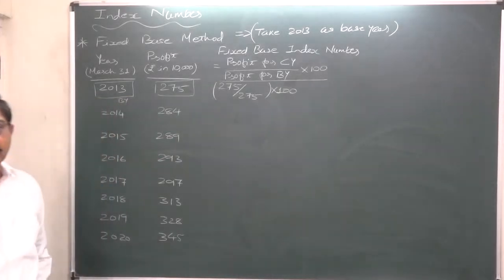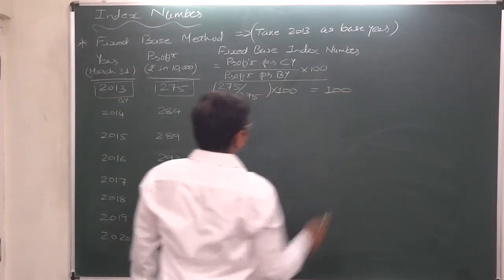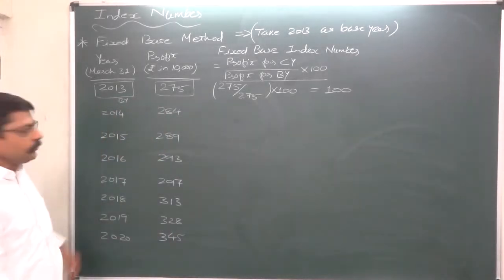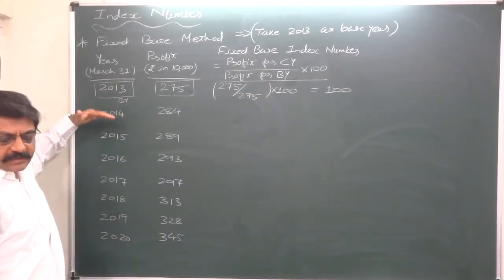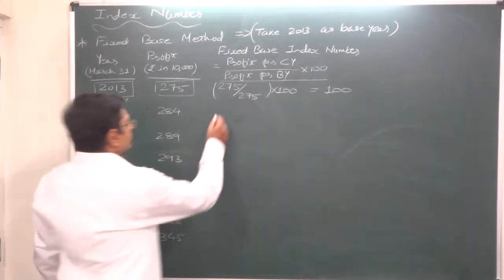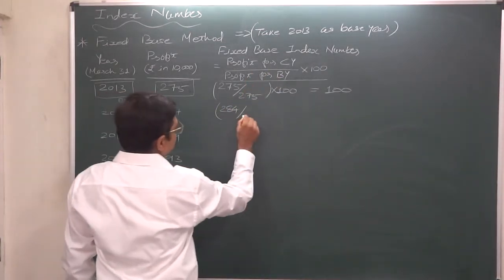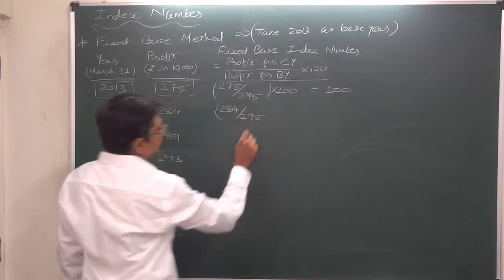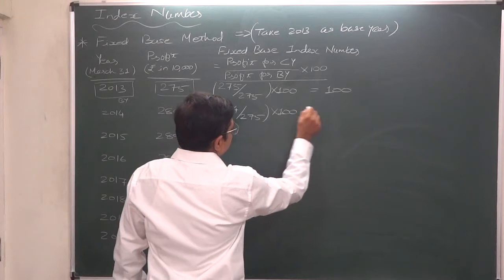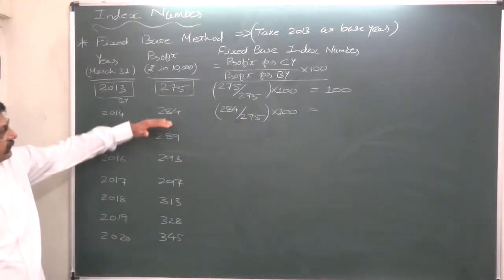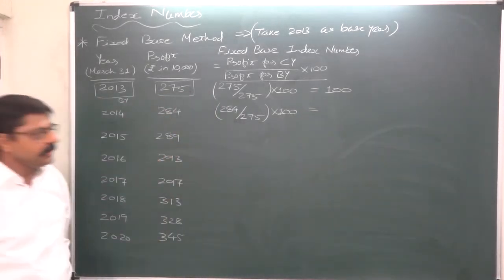Now 2014 becomes current year. Base year remains 2013 because of fixed base method. So it will be 284, profit for current year, divided by 275, profit for base year 2013, into 100. The profit has marginally increased from 275 to 284, and index number comes to 103.27. Please keep two decimal places.